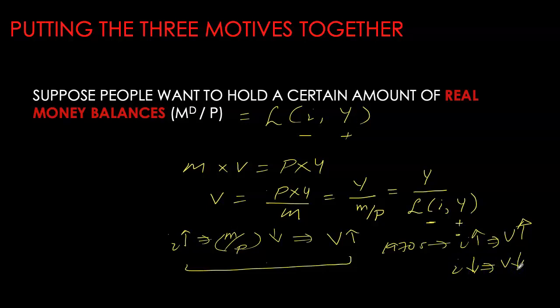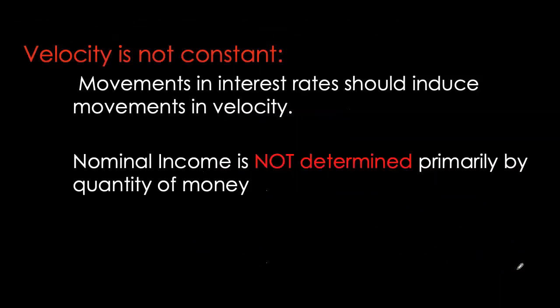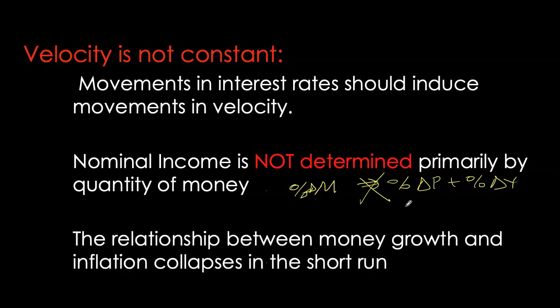Any shock to the economy that causes interest rates to change, and thereby money demand to change, will also in turn change velocity. Velocity is no longer constant. The problem is that if velocity is not constant, we can no longer have a direct linkage between nominal GDP and money growth rate. We can no longer use money growth rate as a tool to effectively control inflation, at least not in the short run.